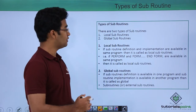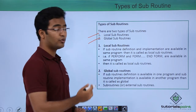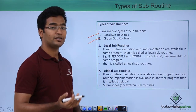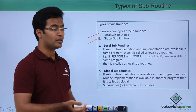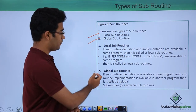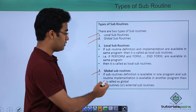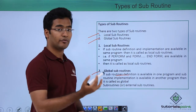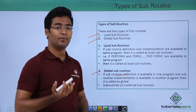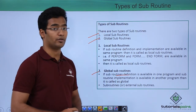There are two types of subroutines: local subroutine and global subroutine. If the subroutine definition — that is, declaration and implementation — are available in the same program, then it is a local subroutine. In the case of a global subroutine, the subroutine definition is available in one program and the implementation is in another program.